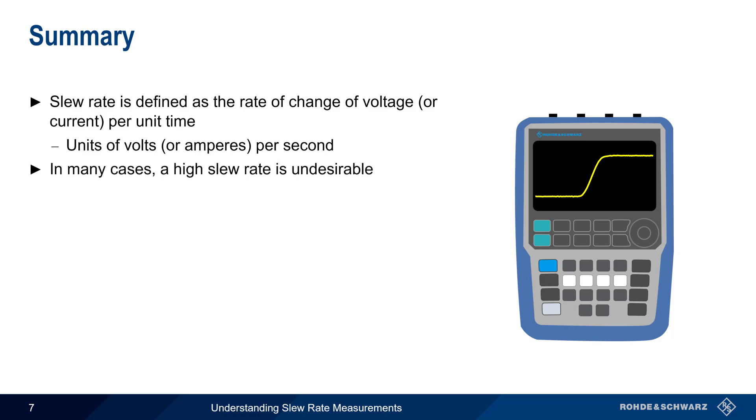In many applications, a high slew rate is undesirable, but one very important exception is a switching mode power supply, where a high slew rate reduces the amount of power lost or dissipated during the transitions between the on and off states.